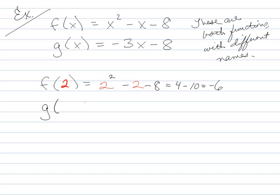But if I ask for g of 2, I'm going to do the same thing, except I'm going to plug it in to the second equation, to the g equation. So I have negative 3 times, instead of x, I'll write a 2, minus 8. So negative 6 minus 8. Negative 14.